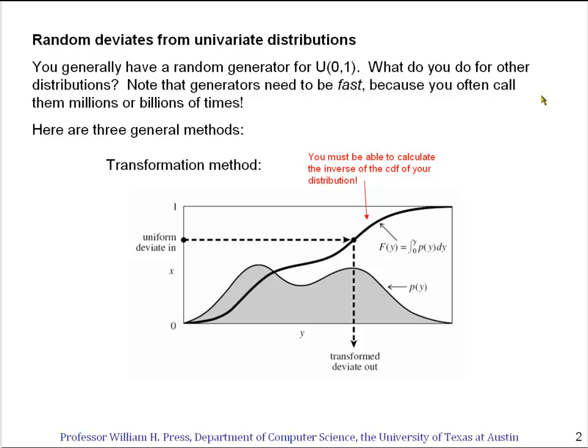The first method is called the transformation method. The idea is that you have some probability distribution p(y), where y is the independent variable, and you want to draw random numbers from that probability distribution. Now, let's suppose you're in the happy case where you can compute analytically by doing an indefinite integral this curve, which is the CDF of the probability distribution.